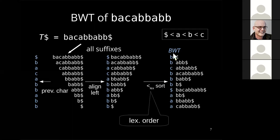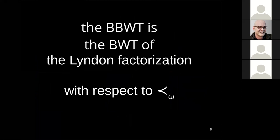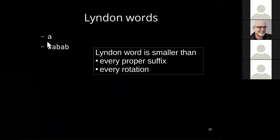The BBWT is the BWT of the Lyndon factorization with respect to the omega order. To explain this, we need two ingredients: the Lyndon factorization and the omega order.